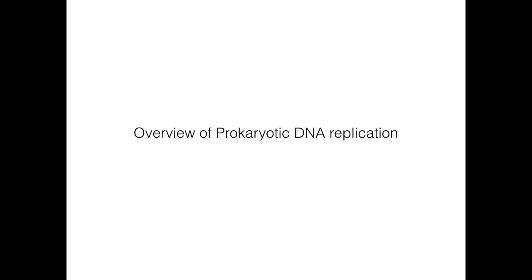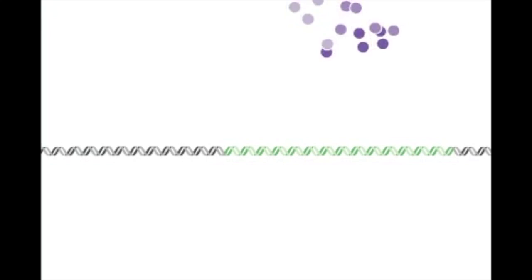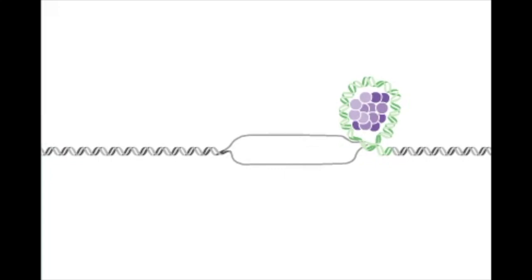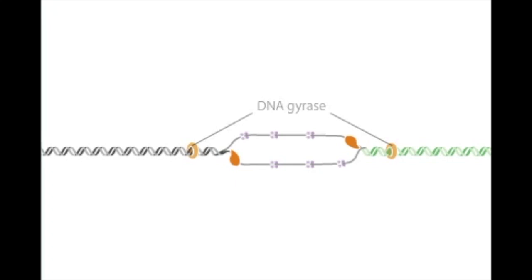Now I'm going to show you an overview of how prokaryotic DNA replication occurs. The initiation of replication requires a particular DNA sequence called the origin, called oriC in the E. coli chromosome. A protein called the initiator protein binds to oriC and causes the DNA to unwind. Unwinding requires several proteins: DNA helicase, which breaks the hydrogen bonds holding the two DNA strands together; single-strand binding proteins, which maintain the DNA in the single-stranded state; and DNA gyrase, which reduces torsional strain.